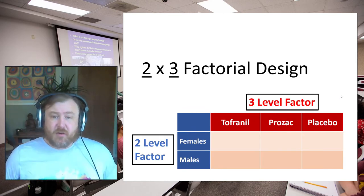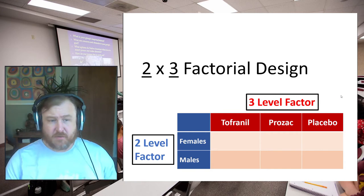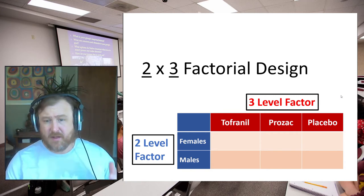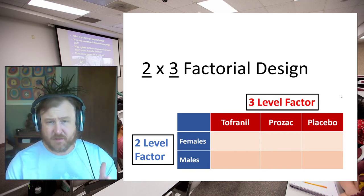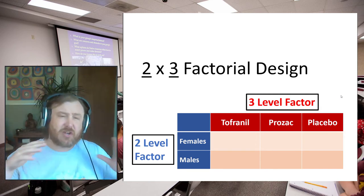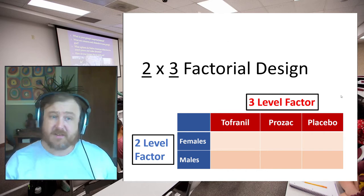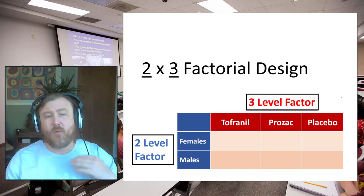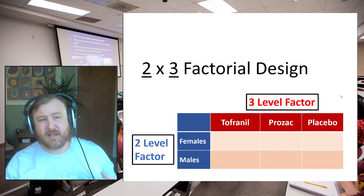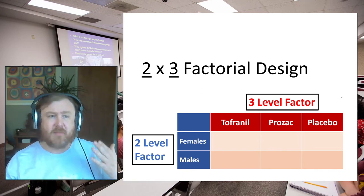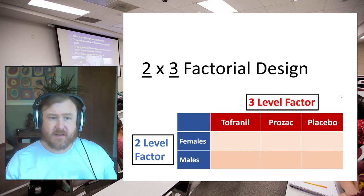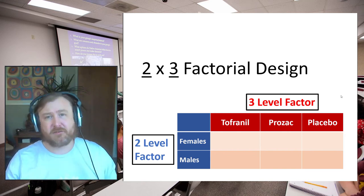You can see we're getting the two-by-three: the three-level factor is the three, the two-level factor is the two. It would be equally correct to say this is a three-by-two factorial design — the order doesn't matter. The key is that when labeling a factorial design, the numbers represent how many levels each factor in that design has.